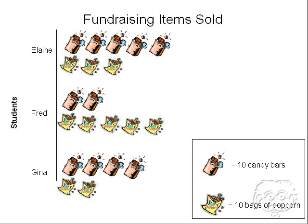I can look at the pictograph and see that Fred sold two candy bars, but each one's worth 10, so really he sold 20 candy bars. And 10, 20, 30, 40, 50 bags of popcorn because there's five bags of popcorn. So as soon as we understand what the image key says, it's really easy to understand the pictograph.